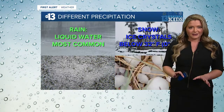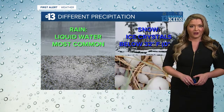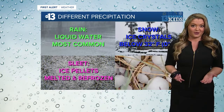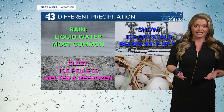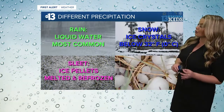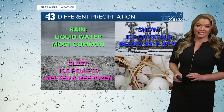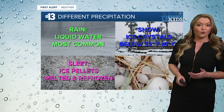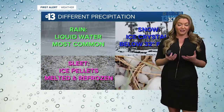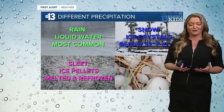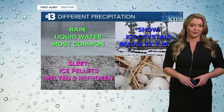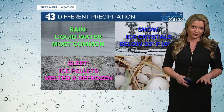But sometimes the layers of air between the cloud and the ground are different temperatures. And in that case, we usually see sleet or graupel. That's what happens if water vapor condenses into an ice crystal in the cloud, but melts and refreezes a few times before actually reaching the ground.